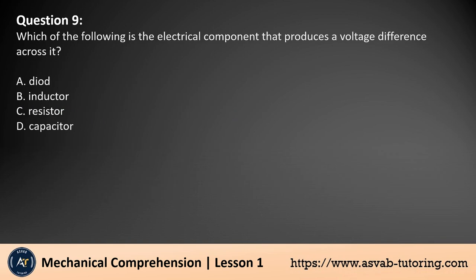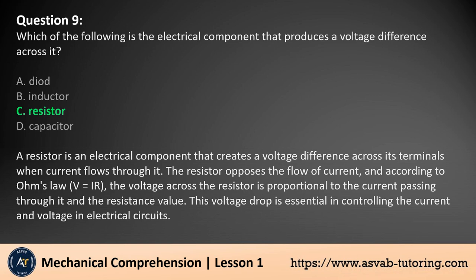Question 9. Which of the following is the electrical component that produces a voltage difference across it? A. Diode. B. Inductor. C. Resistor. D. Capacitor. The answer is C. A resistor is an electrical component that creates a voltage difference across its terminals when current flows through it. The resistor opposes the flow of current, and according to Ohm's law, V equals IR, the voltage across the resistor is proportional to the current passing through it and the resistance value. This voltage drop is essential in controlling the current and voltage in electrical circuits.